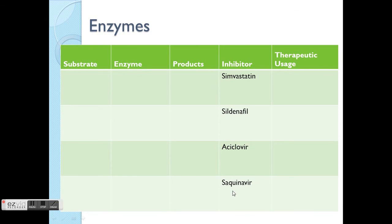Other examples of enzyme-targeting drugs include neostigmine, captopril, enalapril and the pril family, trimethoprim, simvastatin, sildenafil, acyclovir, and saquinavir. Go and look up all the information and we'll discuss them in class.